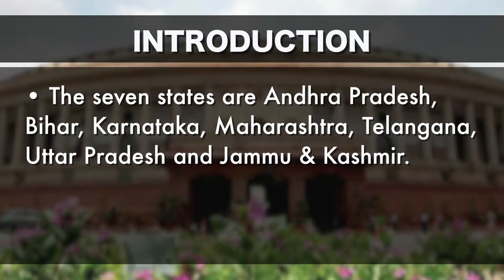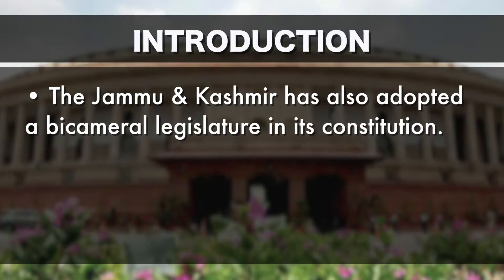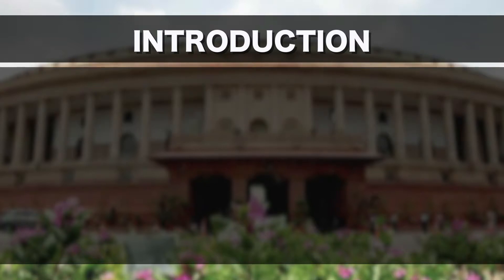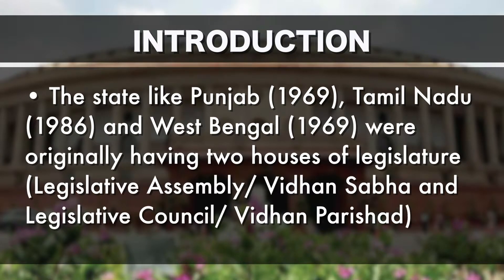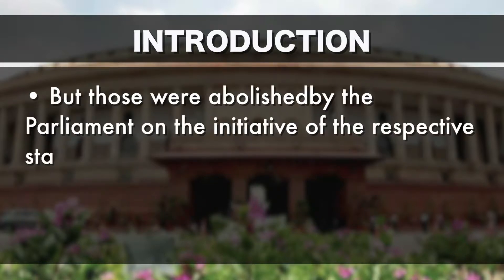The seven states which are having bicameral houses are Andhra Pradesh, Bihar, Karnataka, Maharashtra, Telangana, Uttar Pradesh, and Jammu and Kashmir. States like Punjab, Tamil Nadu, and West Bengal were originally having two houses of the legislature — the Legislative Assembly (Vidhan Sabha) and the Legislative Council (Vidhan Parishad) — but those were abolished by Parliament on the initiative of the state legislature or state government.